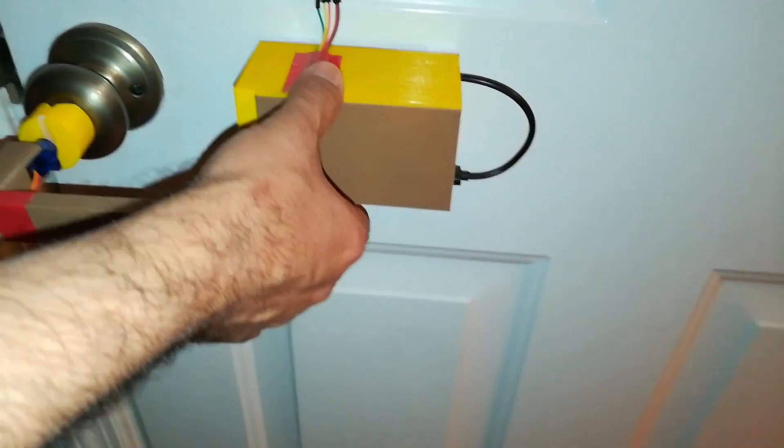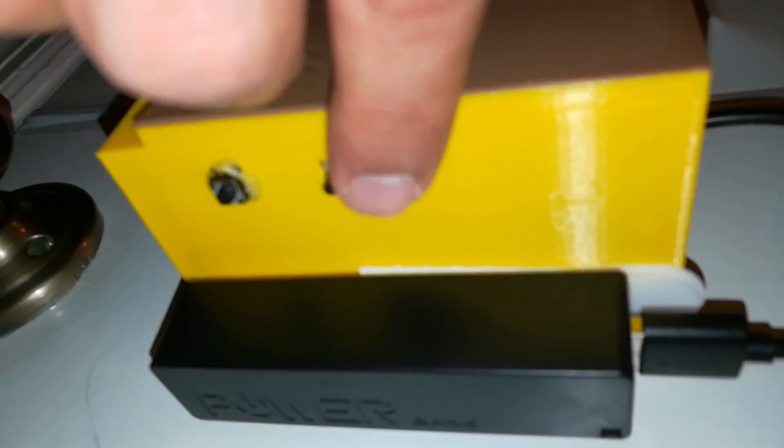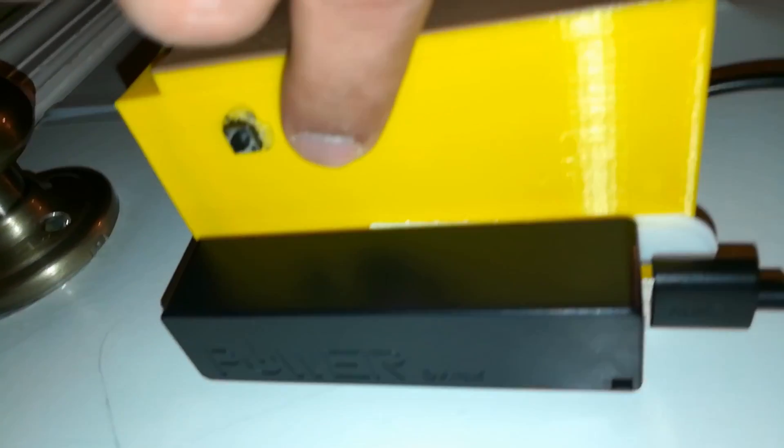The other feature that this lock has is the programming mode. There is a button right here which can be used to program your new secret knock. So if your knock gets leaked out or if you want to just reset your knock, all you have to do is keep this button pressed and do a new knock, and it will reprogram the knock in its memory.